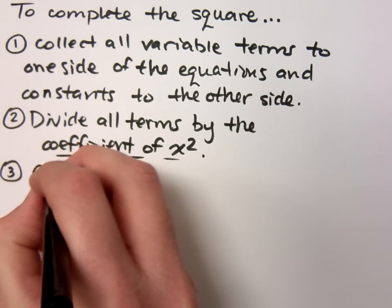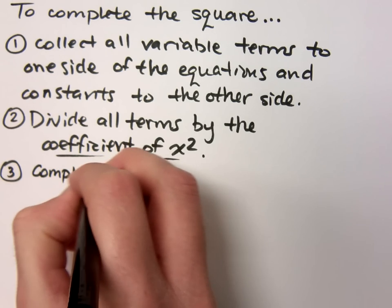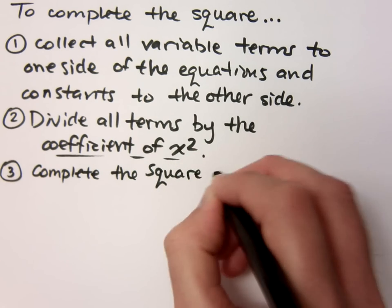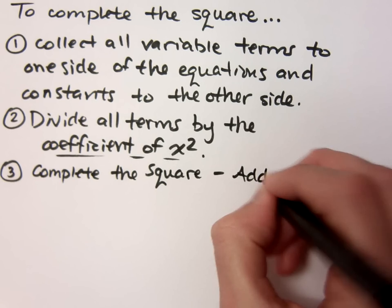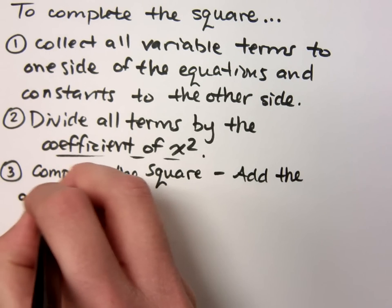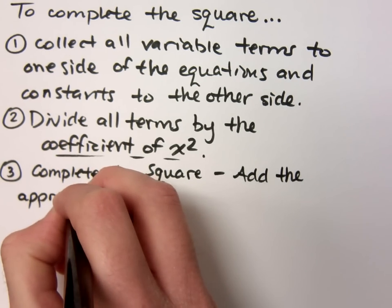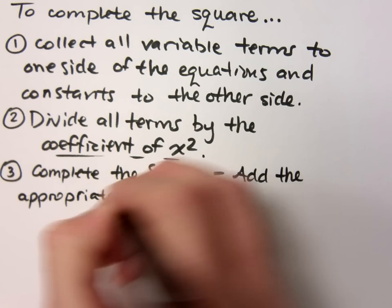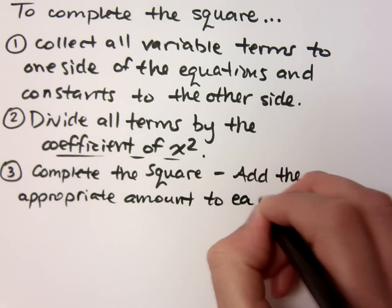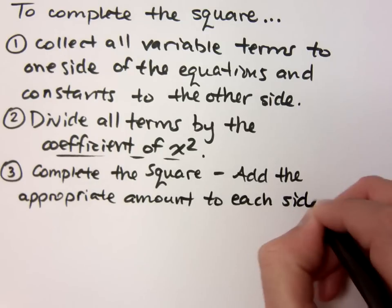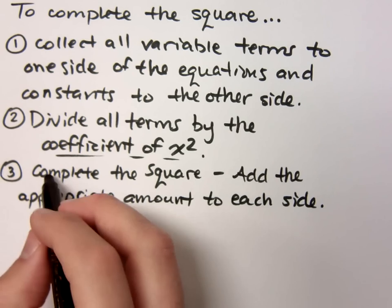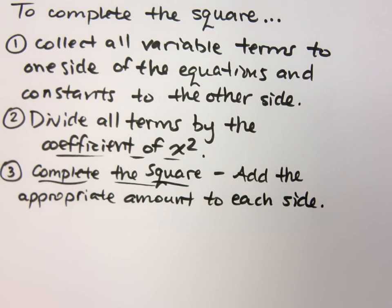Then we're going to complete the square. And when I say complete the square, what I mean is you add the appropriate amount to each side. Because you can't just add it to one side. That would change the problem. You have to add it to both sides.